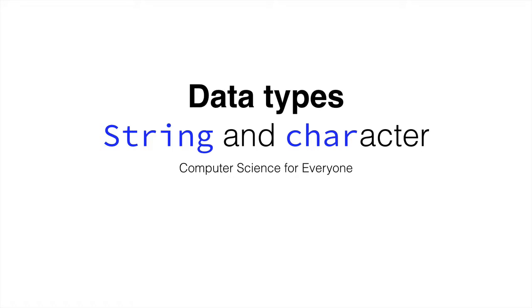First off, let's start with characters, since there's less to cover. Characters, as we know, are used for a single character, such as A, 5, or backslash N, which we've talked about.